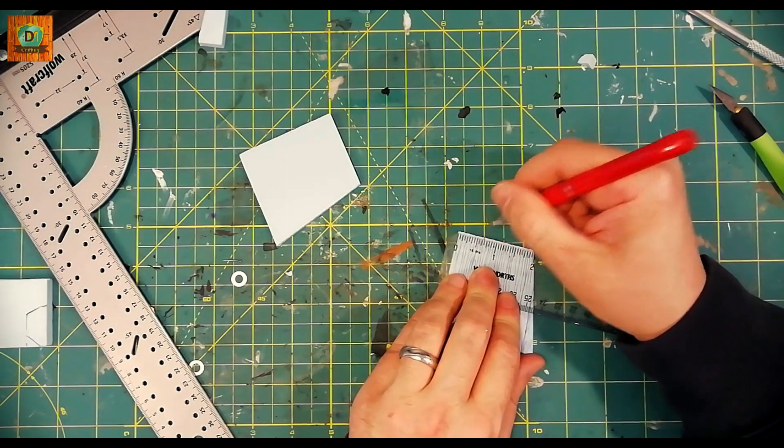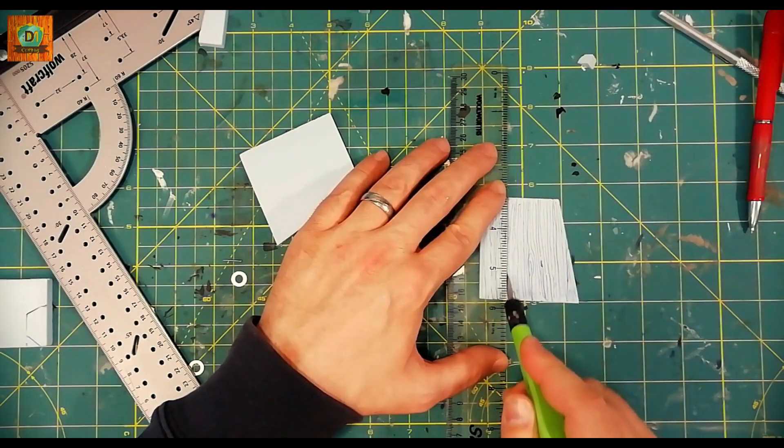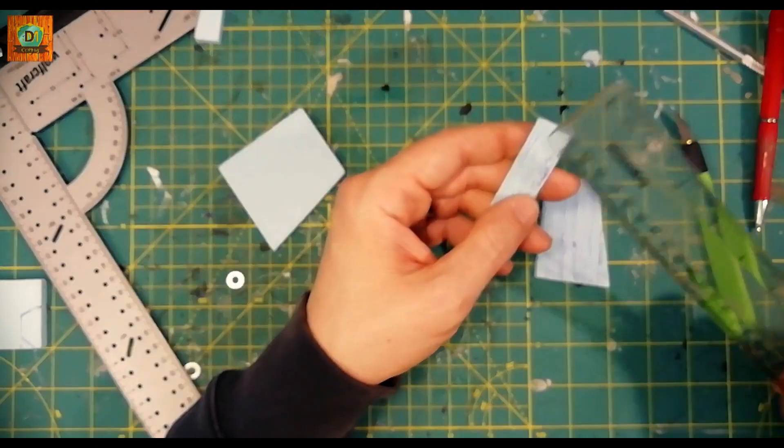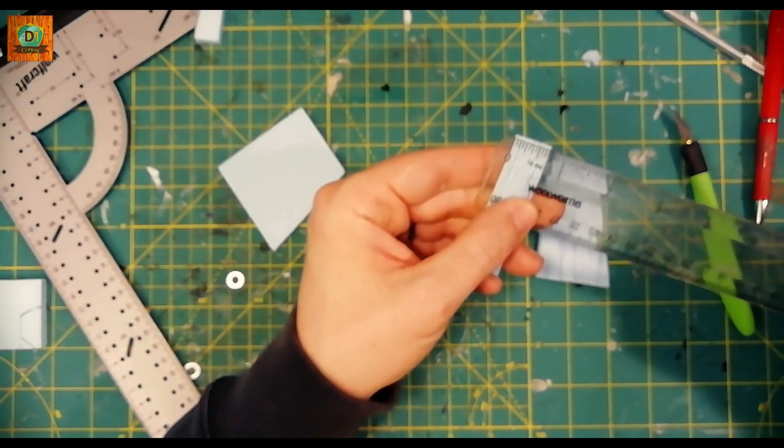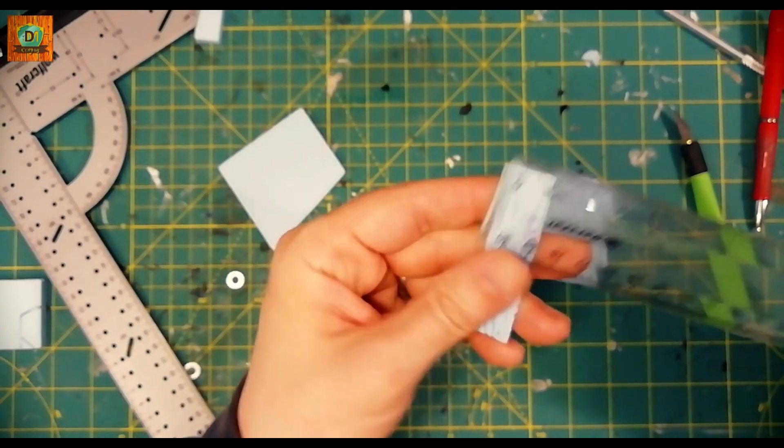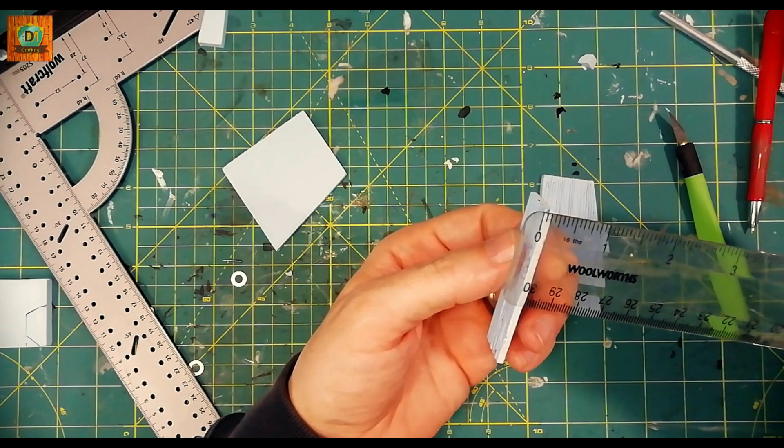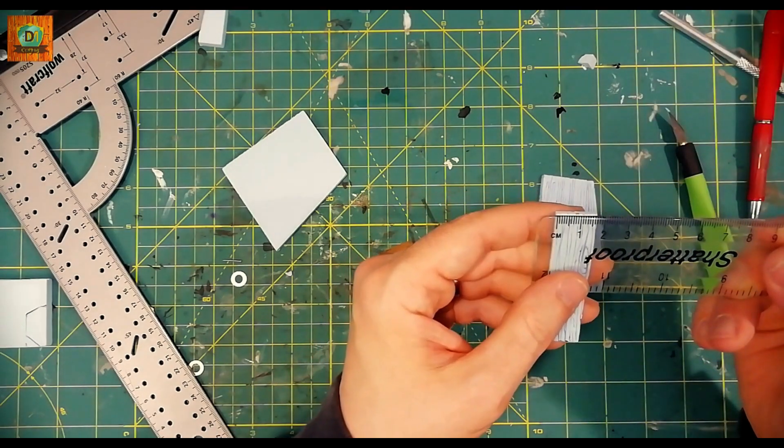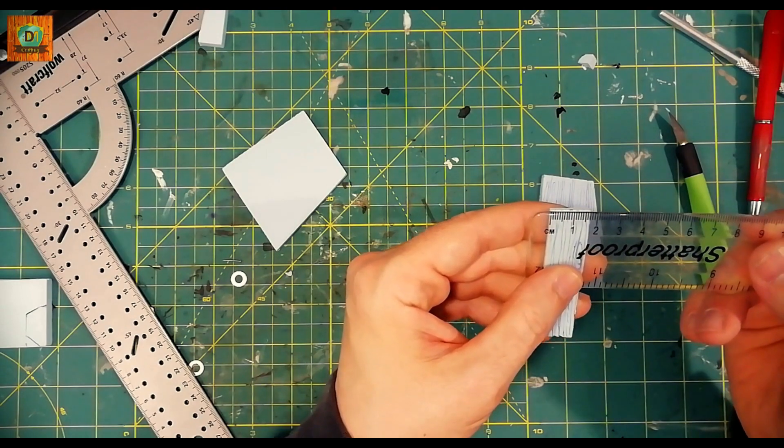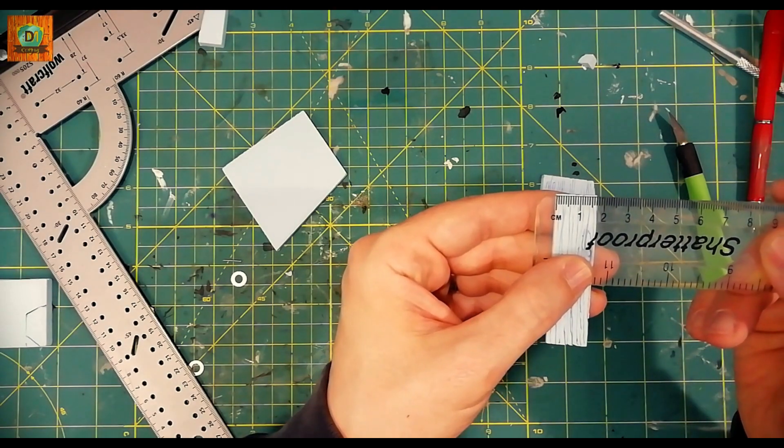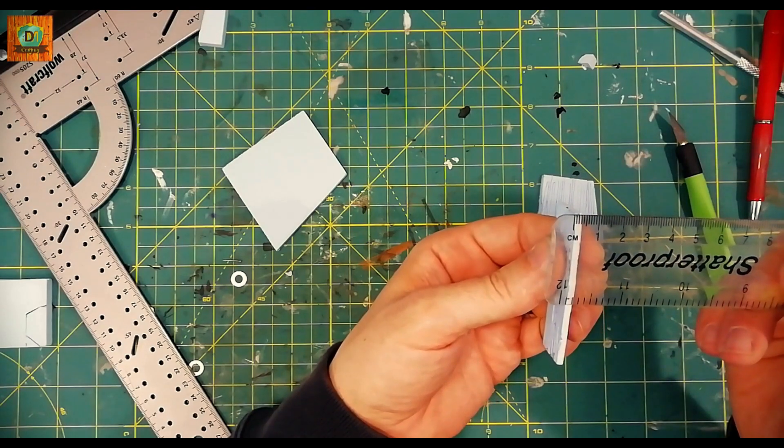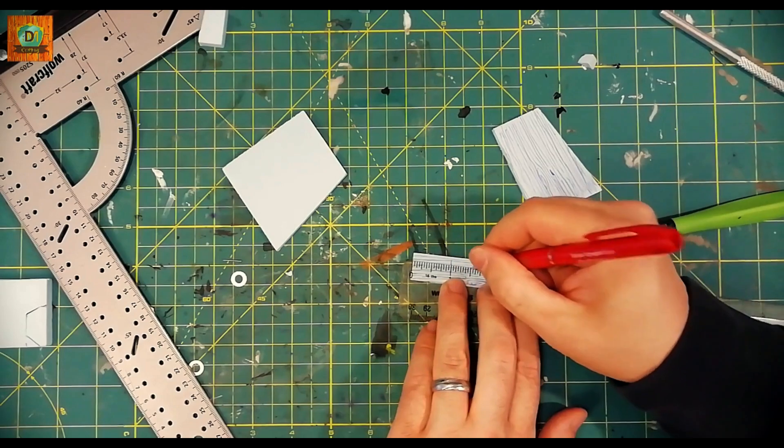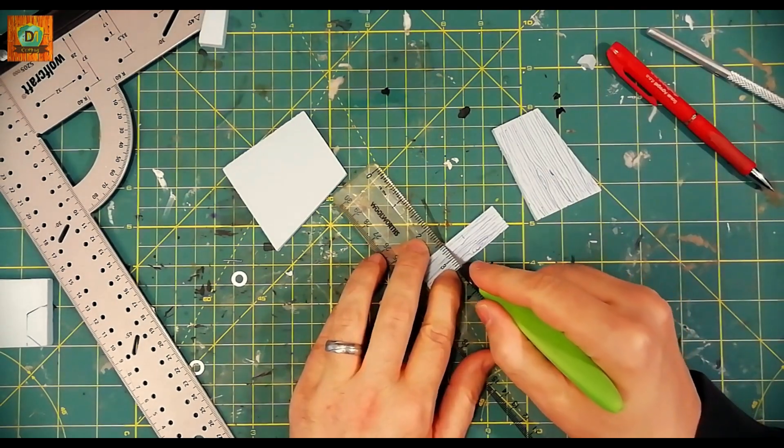I then measure a wood plank three-quarters of an inch wide and one-eighth thick, or if you prefer, around 17 millimeters wide and three millimeters thick. I then measure a couple of pieces, one inch and a half inch, and I cut them.